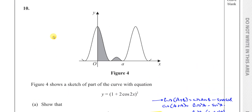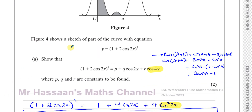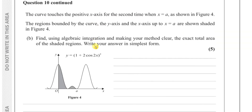For part 10b: the curve touches the positive x-axis for the second time when x = a, as shown in figure 4. The regions bounded by the curve, the y-axis and the x-axis up to x = a are shaded. We need to find, using algebraic integration, the exact total area of the shaded regions.